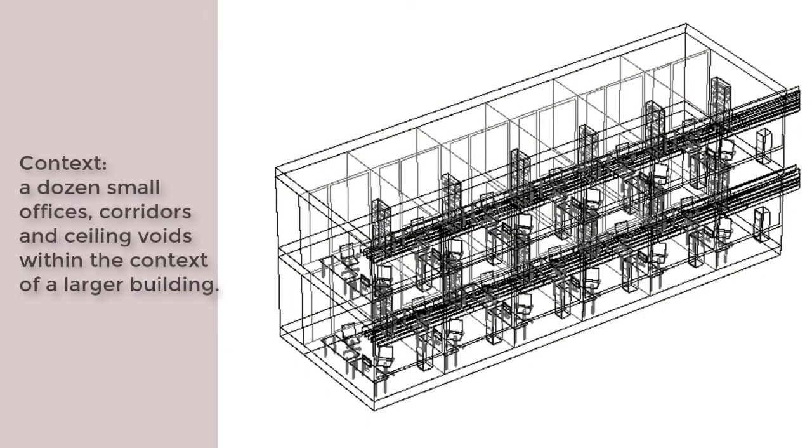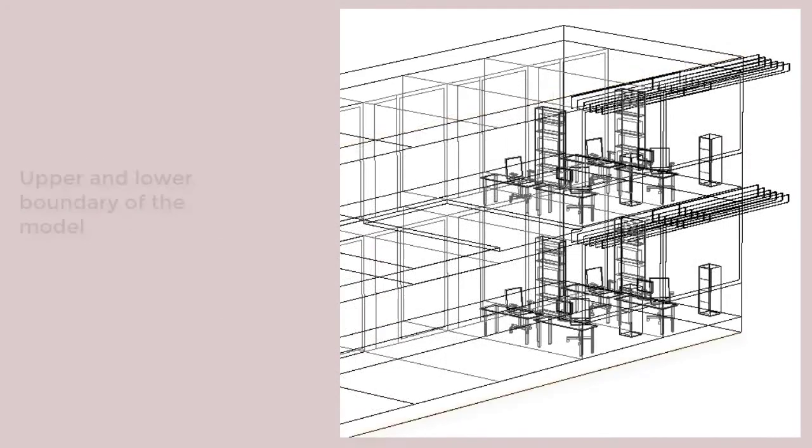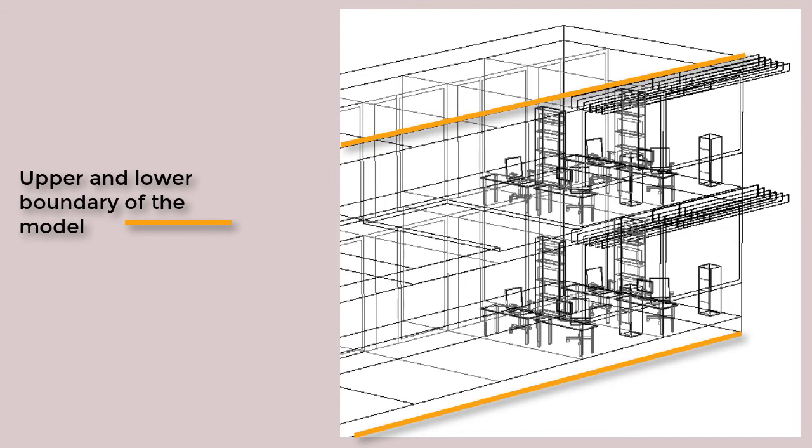We'll use an ESPR model which includes a dozen small offices on two levels. The main point of the model was to explore different heat transfer methods, but it also includes ceiling voids at the upper and lower bounds of the model.